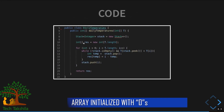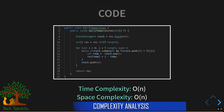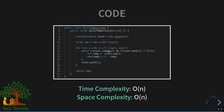The beauty of initializing the result array to zeros upfront is that any temperature with no warmer future day — like 76 or the final 73 — is already zero and requires no additional processing. Time complexity is O(n) since we visit each element once. Space complexity is O(n) for the stack used to assist us in getting the result.